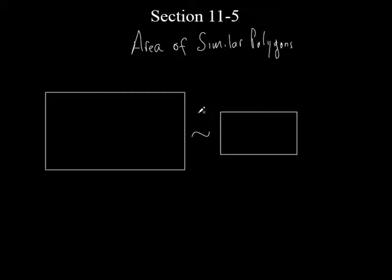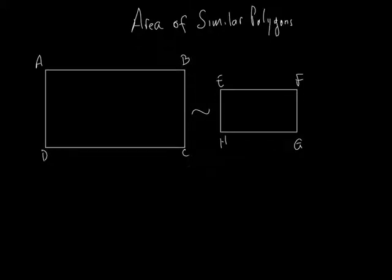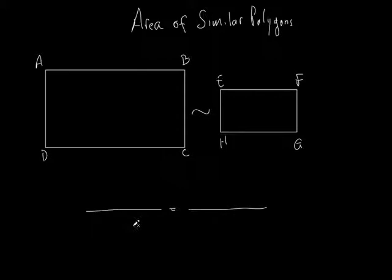You're going to use one formula. I'll label this ABCD and this one EFGH. The formula is a proportion — something over something equals something over something, two ratios set equal to each other. I'll call the areas A1 and A2. So the formula compares A1 to A2 equals the corresponding sides squared. We compare AB to EF, since those are the corresponding sides.